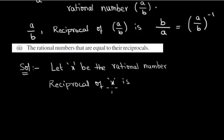Here x is a rational number with denominator 1. And its reciprocal is 1/x, since its denominator is interchanged to numerator and numerator is interchanged to denominator.